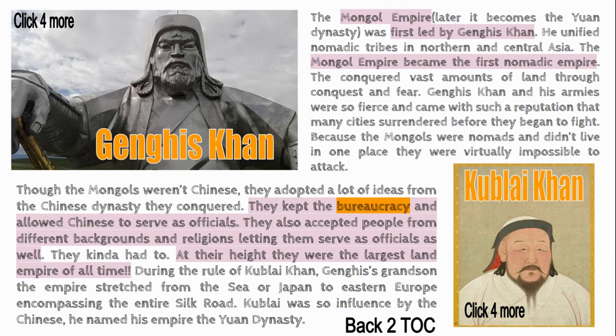The Yuan kept the bureaucracy run by different departments. Although not Chinese themselves, they allowed Chinese officials to serve and also included Muslim people and others from different backgrounds in their government. At their height they were the largest land empire of all time, and they reopened the Silk Road, connecting Europe, Asia, and the Middle East.